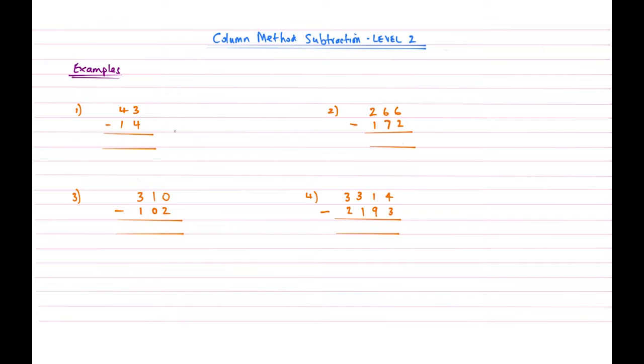Now, that doesn't mean that it's the whole top number that's going to be smaller than the bottom. It's just the individual numbers in each column may be smaller than the bottom, and so we have to do a new concept called compensating or borrowing to get us around that.